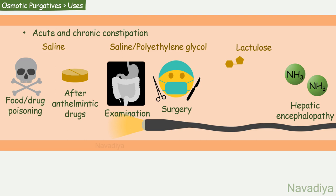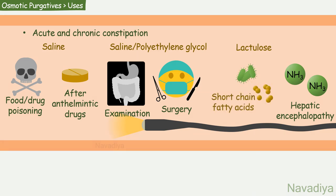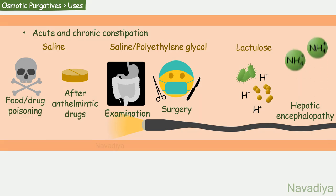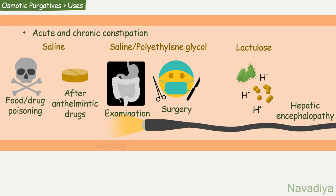Lactulose is used in hepatic encephalopathy. Increased ammonia level is a major problem in hepatic encephalopathy. Intestinal bacteria degrade lactulose into short-chain fatty acids, which makes the lumen more acidic, leading to conversion of ammonia into ammonium. As ammonium is a polar compound, it cannot be absorbed. This effect, along with the purgative action of lactulose, results in increased elimination of ammonia, thereby reducing ammonia levels in the blood.